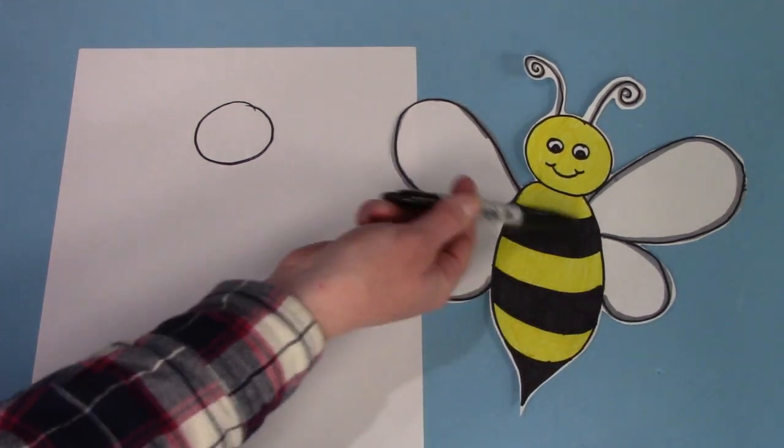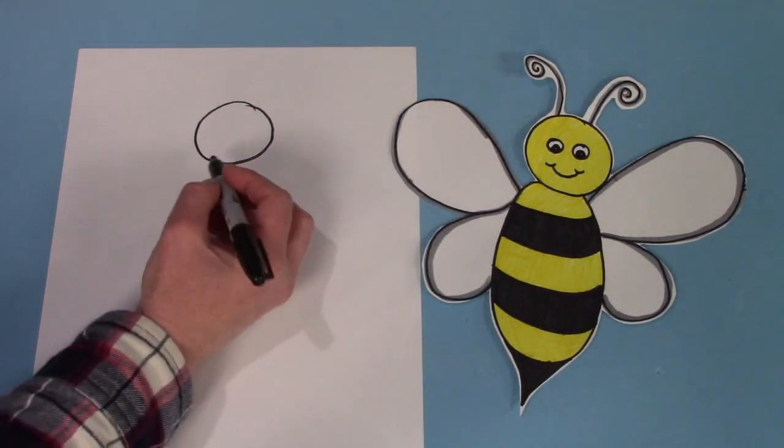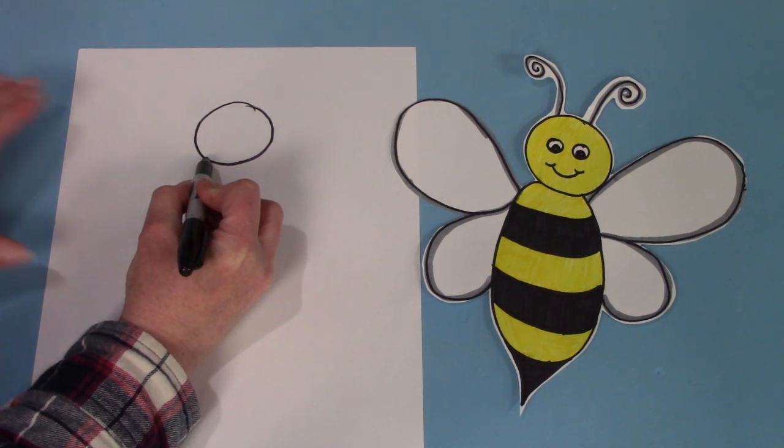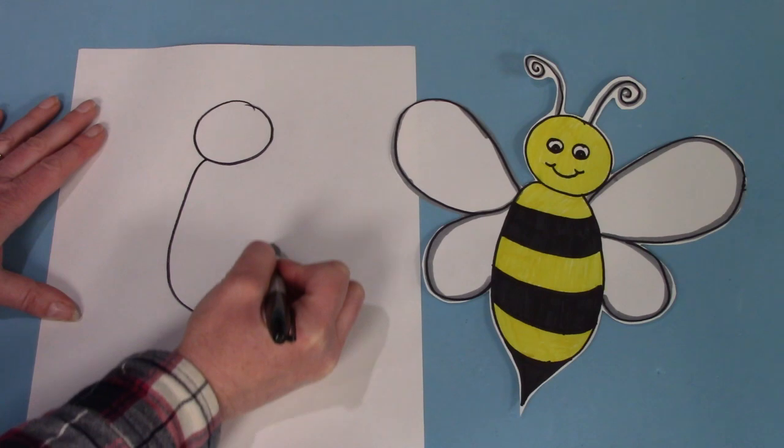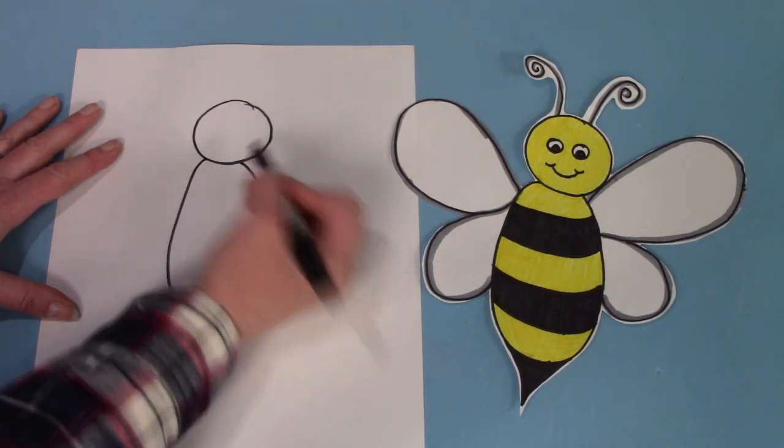Then on the bottom, I'm going to do an oval. It's going to start here and go around like that.